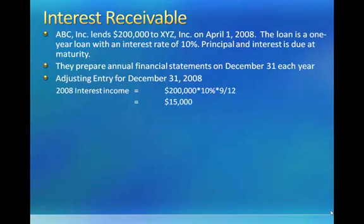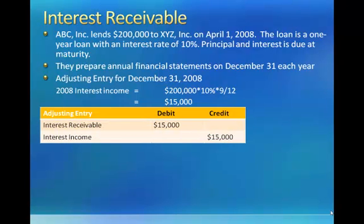Even though we're going to receive $20,000 in interest on April 1st, 2009, $15,000 of it is earned in the current year, 2008. We record this by debiting interest receivable and crediting interest income — interest receivable representing a claim to future interest payments, and interest income reflecting that we've earned $15,000 in the current year. It's like charging rent on the money that someone borrowed.